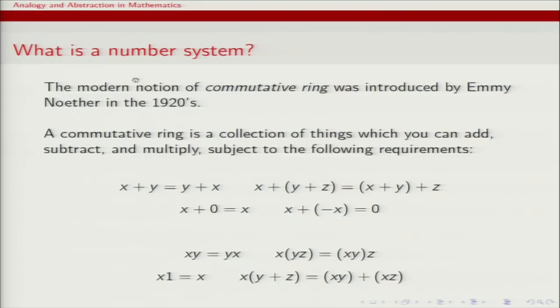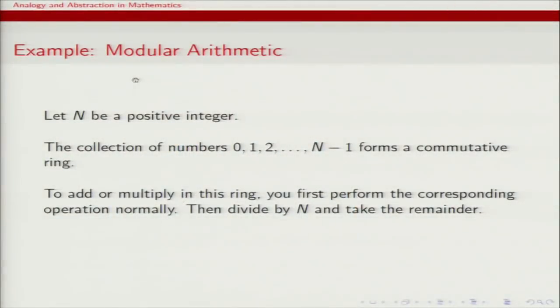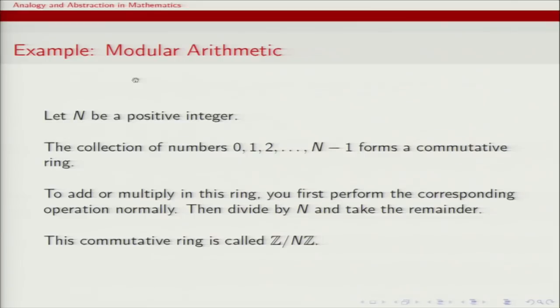I've already given lots of examples: the integers, the rational numbers, the real numbers, the complex numbers — those are all commutative rings. And there are many more. For instance, modular arithmetic: fix some positive integer n and consider the collection of numbers 0 through n minus 1. You can make this into a commutative ring by adding or multiplying normally, then dividing by n and taking the remainder if the result falls outside the range. This important example is denoted Z mod n.